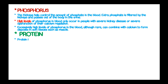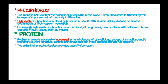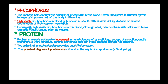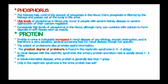Protein in urine is noticeably increased in renal disease of any etiology except obstruction, and is therefore a very sensitive general screening test for renal disease, although it is not specific. The greatest degree of proteinuria is found in nephrotic syndrome at more than 3 to 4 grams per day. In renal disease with nephrotic features, urinary protein excretion is usually about 1 to 2 grams per day. In tubular interstitial disease, urine protein is generally less than 1 gram per day. Only in nephrotic syndrome is the urine protein loss sufficient to result in hypoproteinemia.